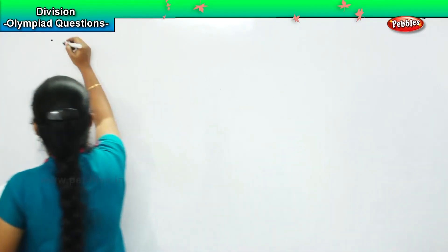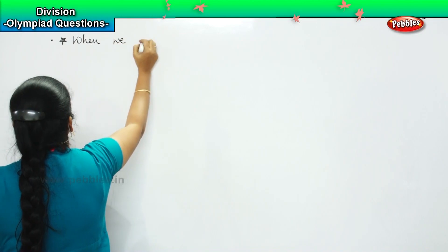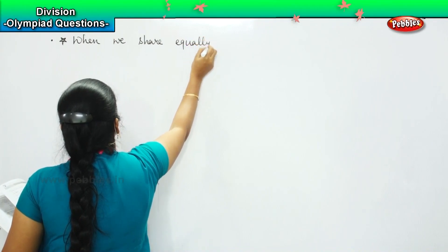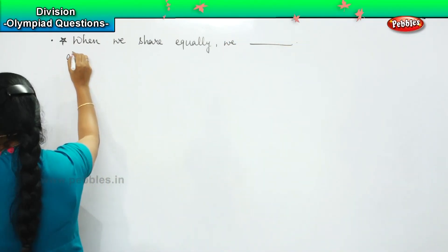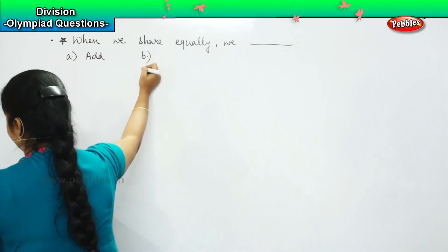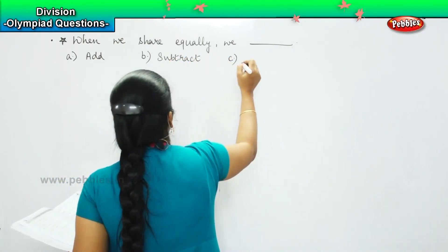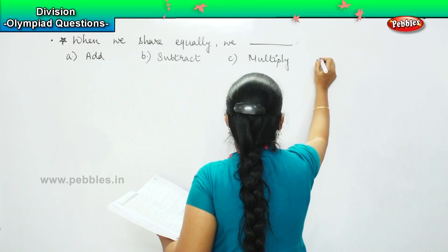Now, children, based on the formulas and the methods which we have learnt, we are going to solve our sums. So are you all ready to solve the sums with me? Fine. So here is your first question. The question says, when we share equally, we ___. Your options are: option A, add; option B, subtract; option C, multiply; and option D, divide.